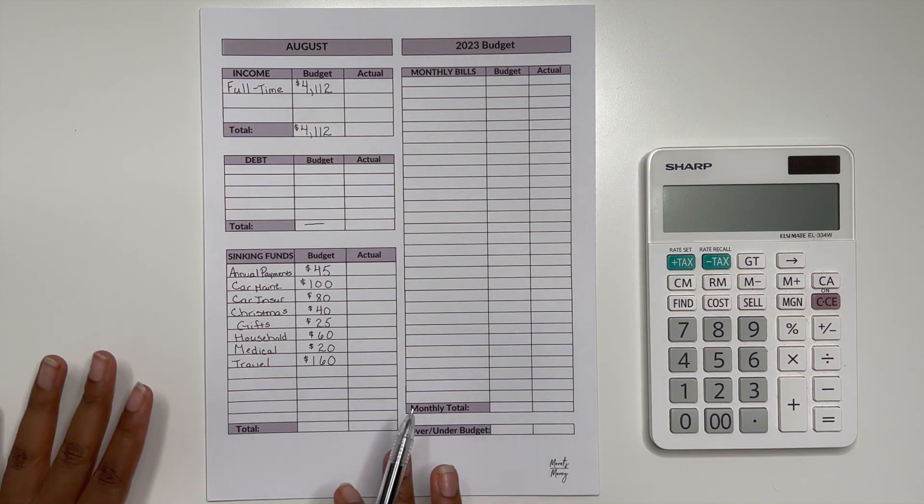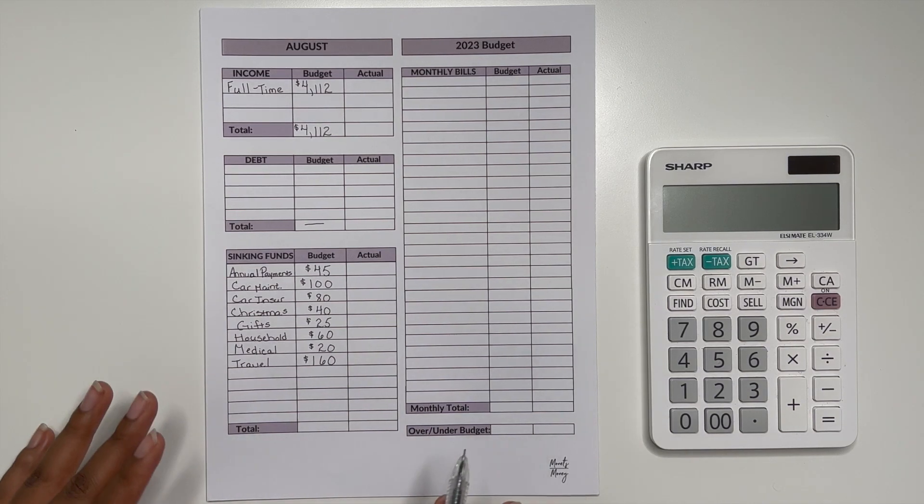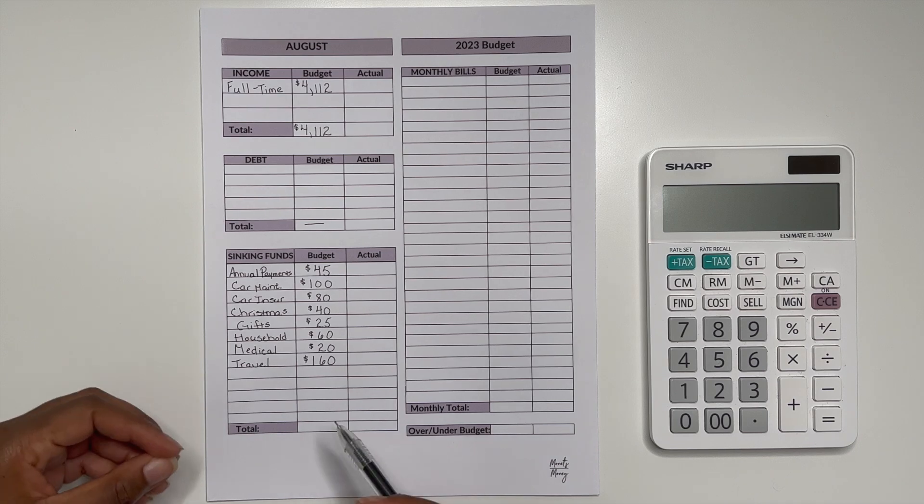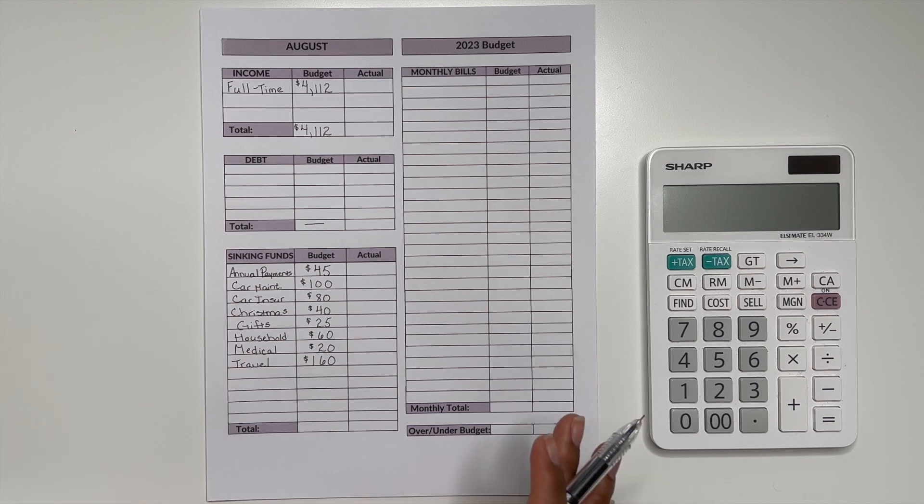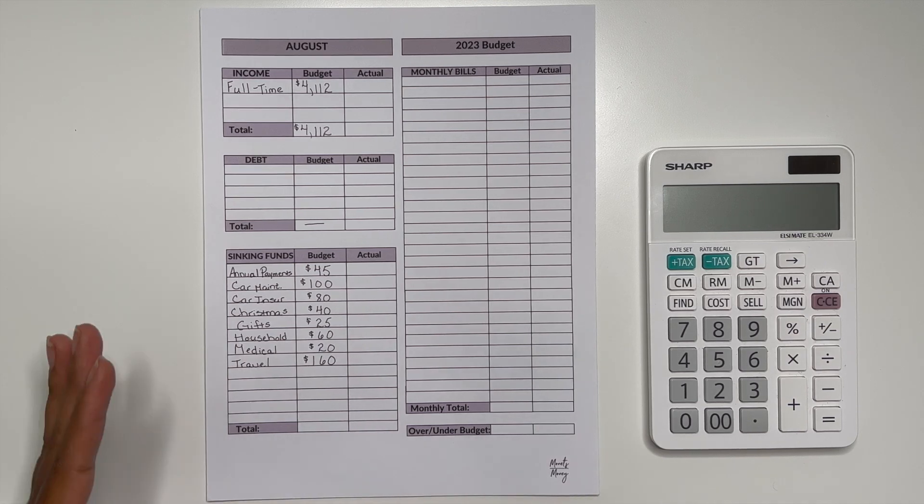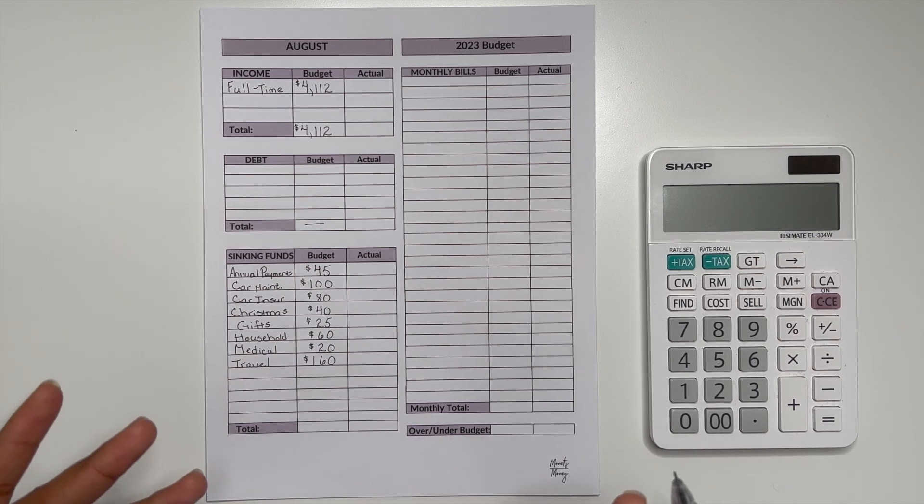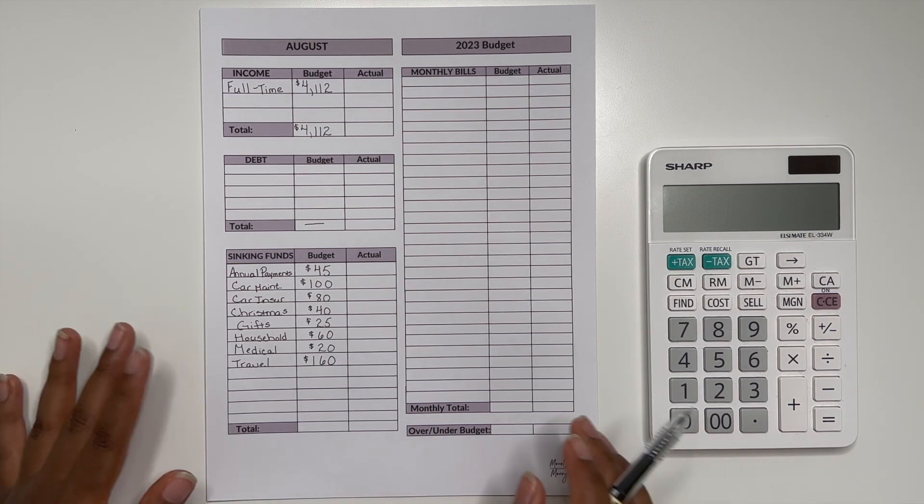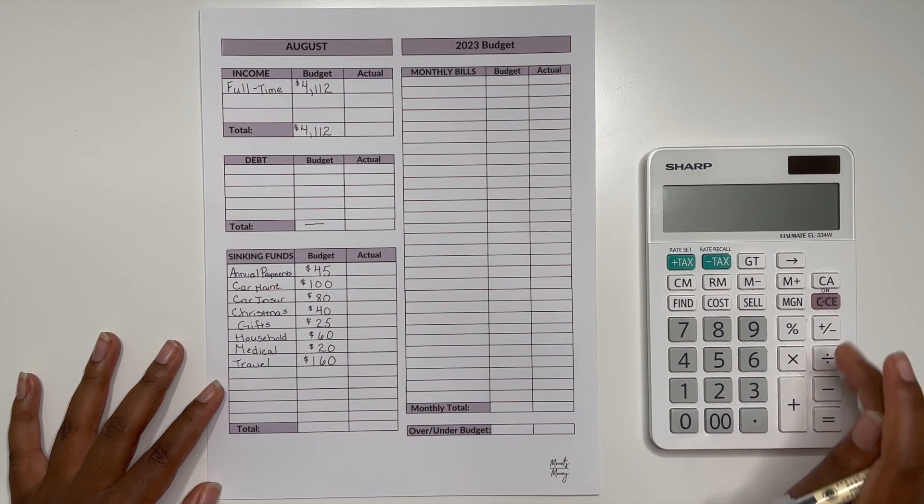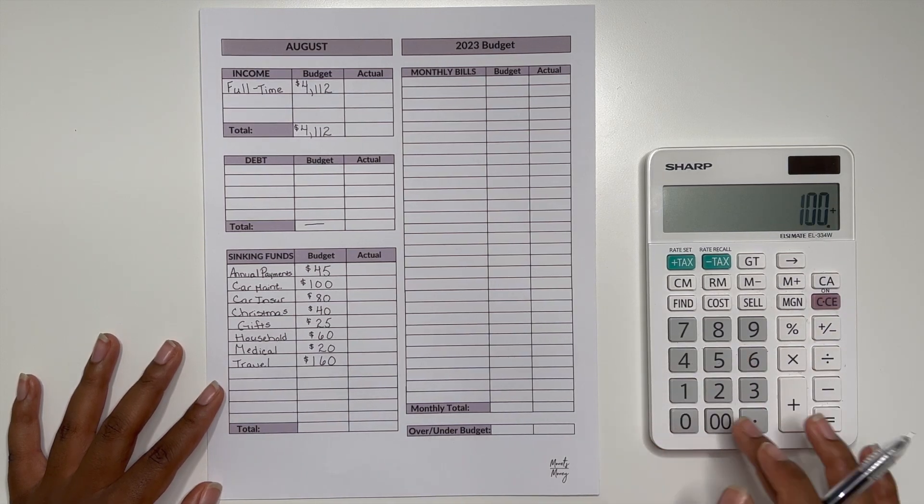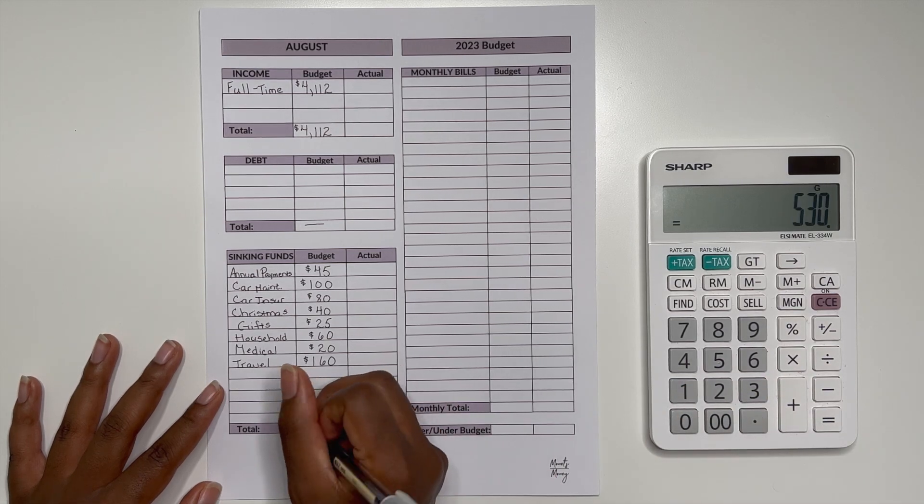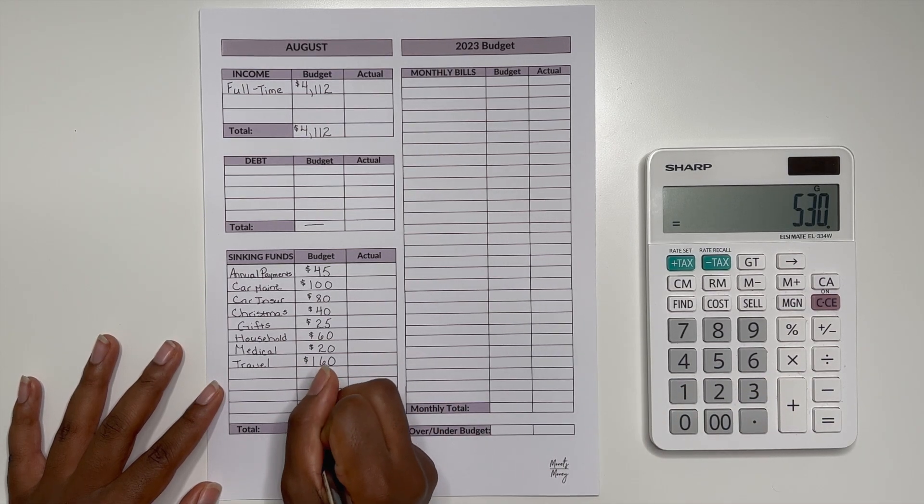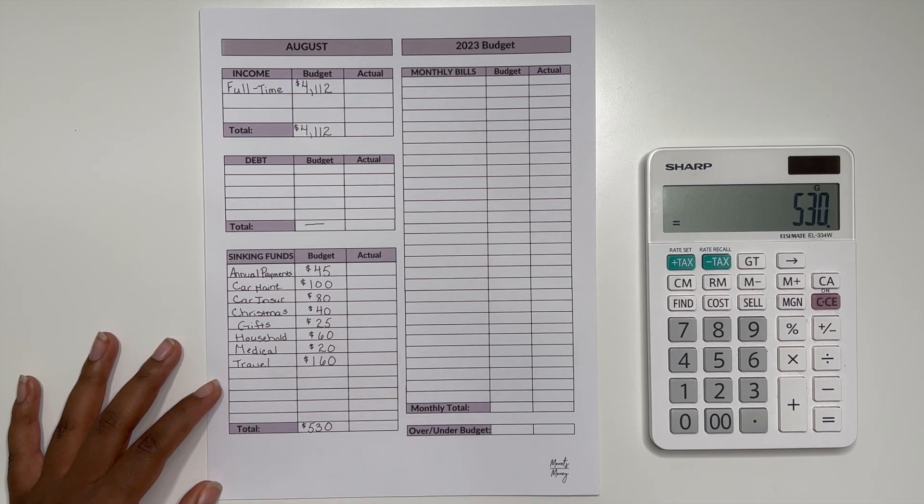So again just looking at my sinking funds if we look at what the highest one is we see that it's travel. I am trying to prioritize for my travel because at the end of this month I am going to Florida. So I am just trying to build up the funds for that so I can use that while I'm on my little mini vacation. So let's go ahead and total up everything for sinking funds and see what that gives us. Alright so that's a total of $530 budgeted for my sinking funds.